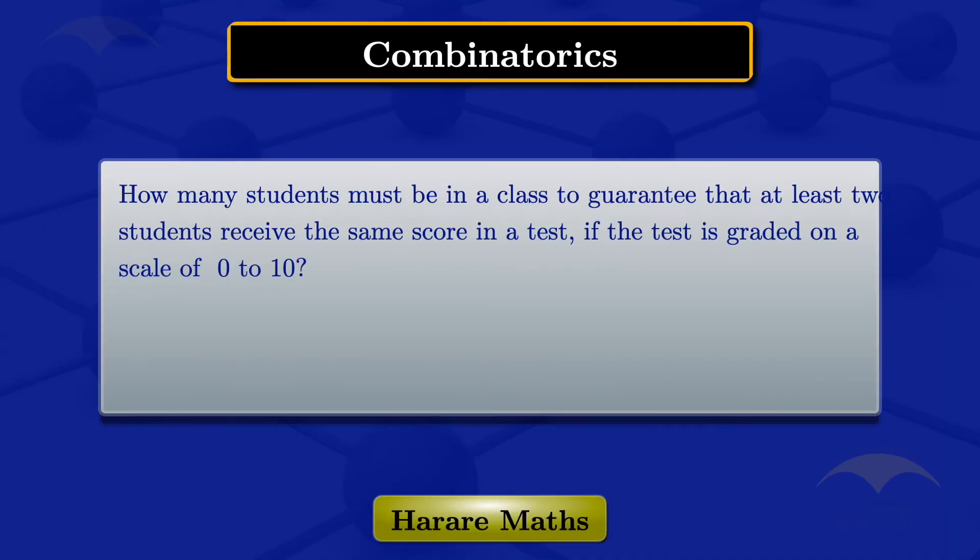In this video I'm going to find the number of students that should be in a class to guarantee that at least 2 students receive the same score in a test, and then I'll consider a group of 367 people and find the least number of people born on the same date.